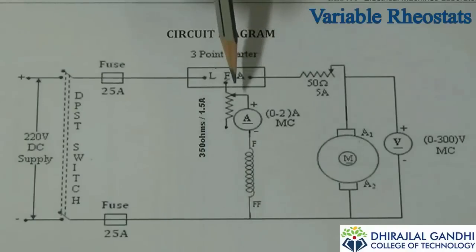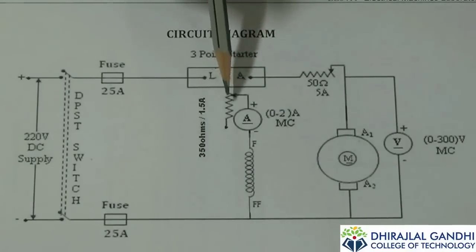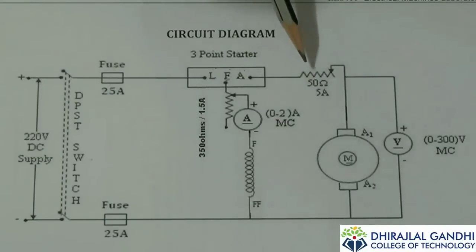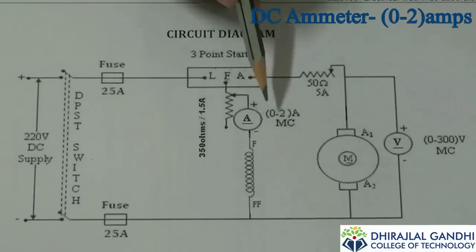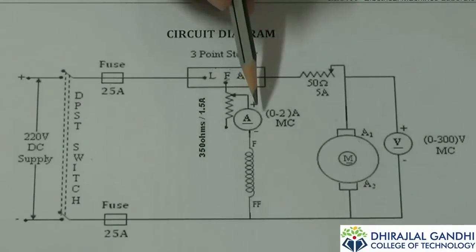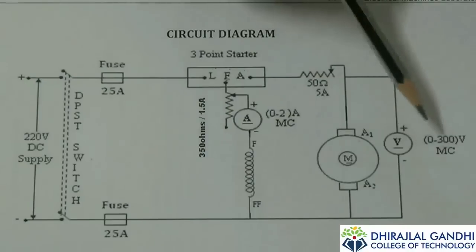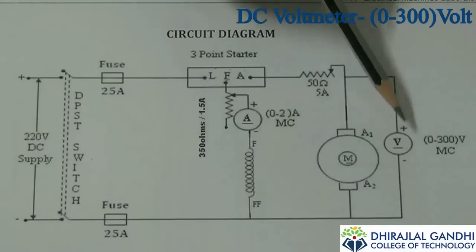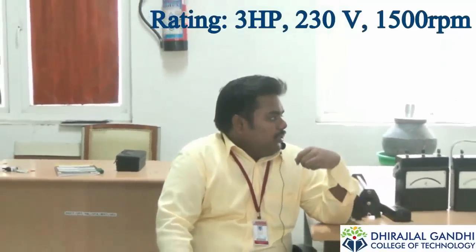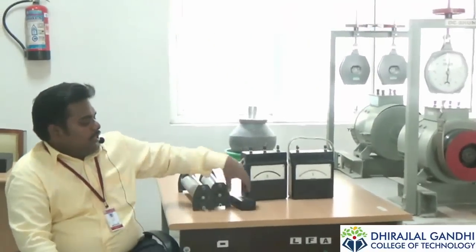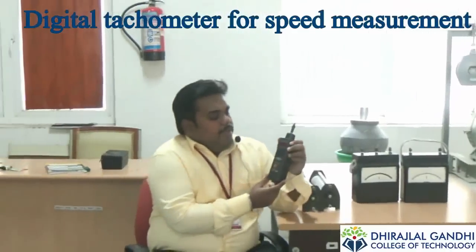And we are using two variable rheostats — one for field winding and another one for armature winding. In series to the field winding, a DC ammeter in the range of 0 to 2 amps is used to check the ammeter current. And we are going to use a voltmeter in the range of 0 to 300 volts, which is connected in parallel to the armature winding. Initially, we need a DC shunt motor which carries 3 HP, 230 volt, 1500 RPM. And we need a tachometer, because we measure the speed. It is a digital tachometer.